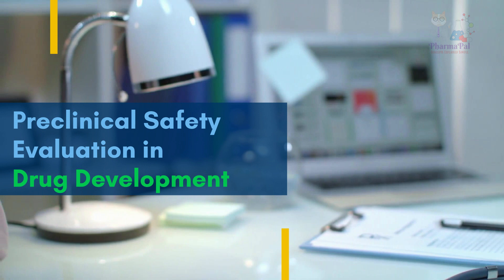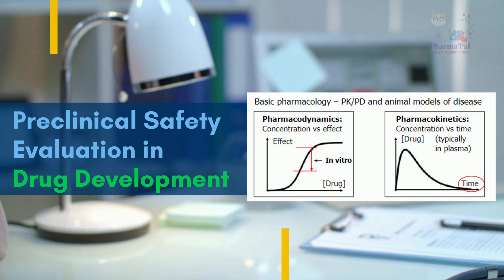Before we delve into the details of preclinical safety evaluation, let's quickly recap the concepts of pharmacodynamics and pharmacokinetics. Pharmacodynamics refers to how a drug affects the body, while pharmacokinetics describes how the body processes and eliminates the drug. ADME stands for absorption, distribution, metabolism, and excretion — these processes determine the amount of drug and its metabolites in the body. Bioavailability, which is the fraction of the administered dose that reaches the circulation, is also an important factor to consider.